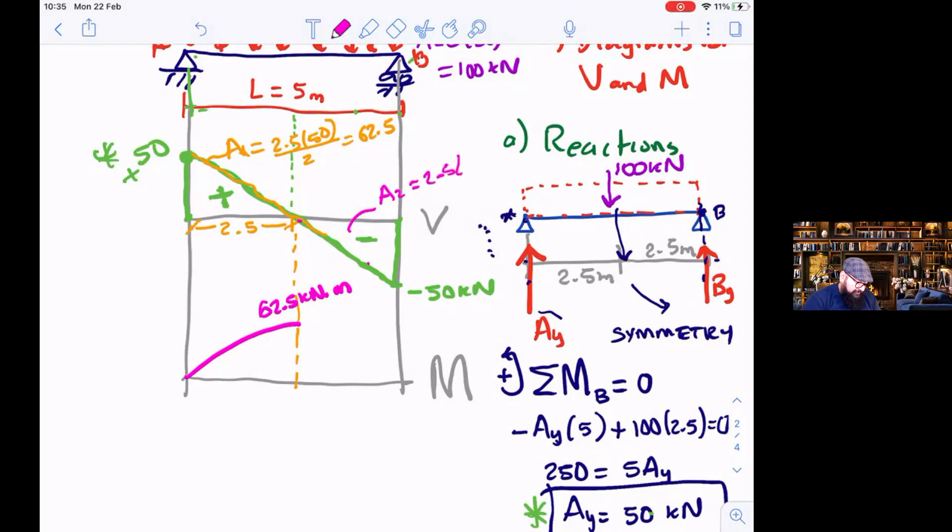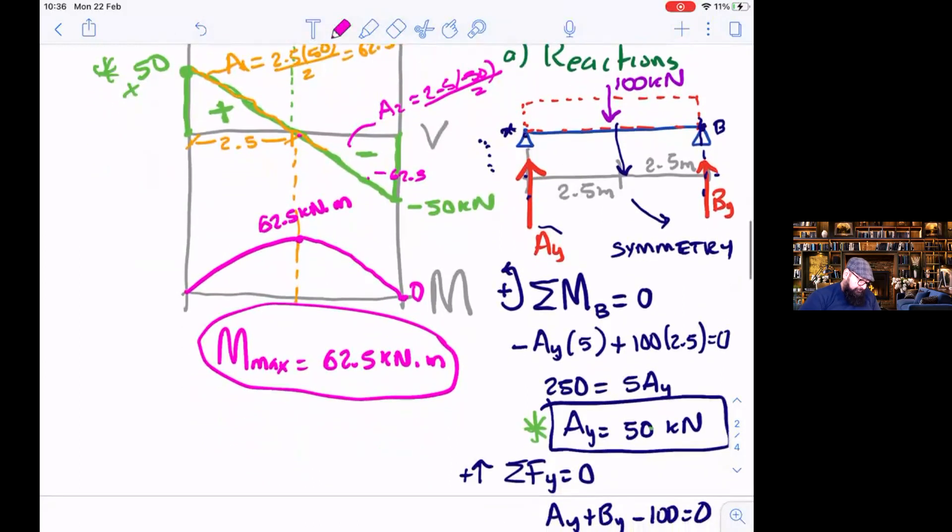Now this area is exactly the same, area two. 2.5 times minus 50 divided by two is minus 62.5. And I'm 62.5 minus 62.5, I get to zero. And this is my bending moment diagram M, with this maximum value. Any questions? I'm going to put a note here.